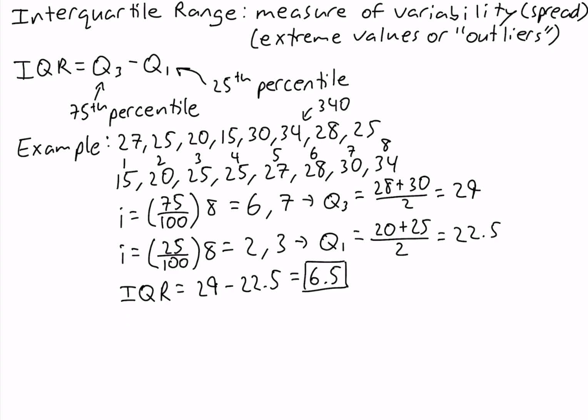The range of the original data set would be 34 minus 15, which equals 19. In the new data set with the extreme value, the range would equal 340 minus 15, which equals 325.